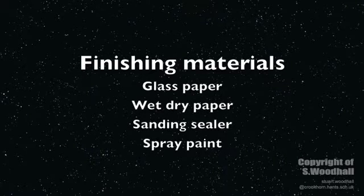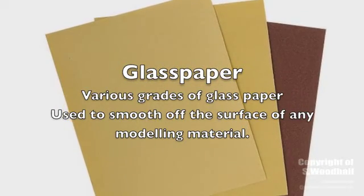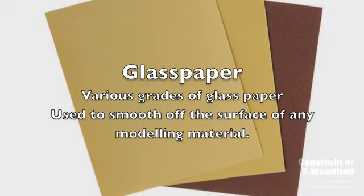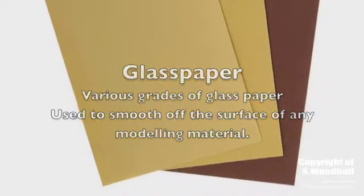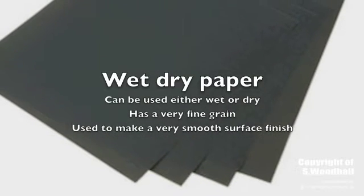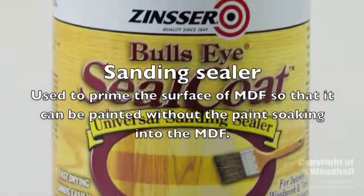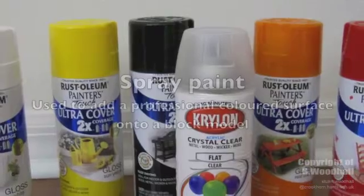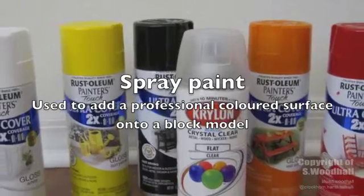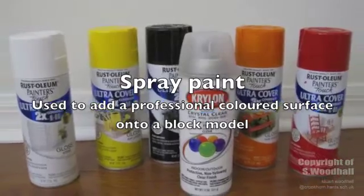We are now going to look at types of finishing materials that are used. The first is glass paper, which is used for making a smooth surface finish on either wood or polystyrene — essentially styrofoam. We then have wet dry paper, which is used for making a smooth surface finish on acrylic and MDF. A sanding sealer is used for sealing porous surfaces of MDF prior to painting, and spray paint is used to apply a professional looking finish to an MDF block model once sealed.